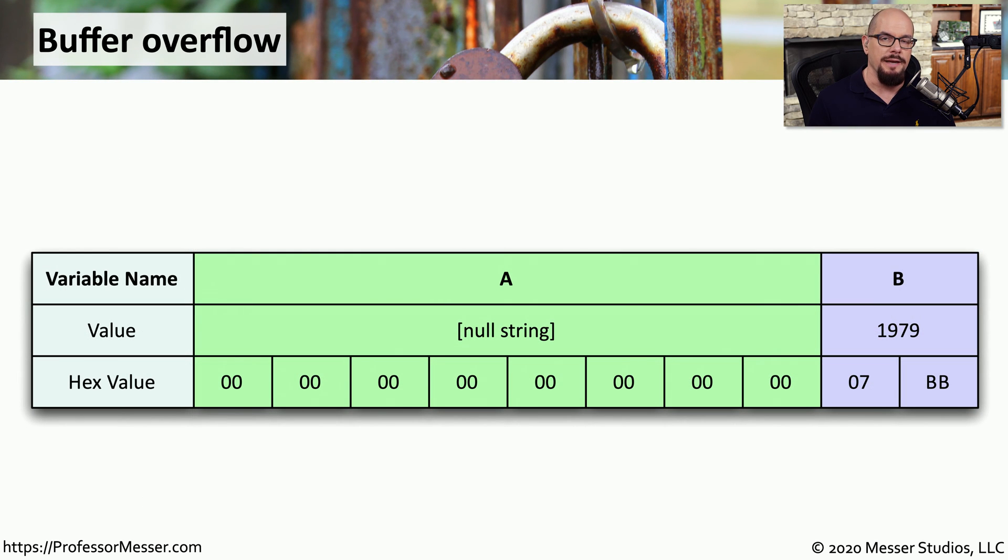Here's a visual example of what a buffer overflow might look like. In this particular computer, we have an application that's running with two variables, a variable A and a variable B. Right now, the only variable that has data inside of it is variable B, which has the value 1979.